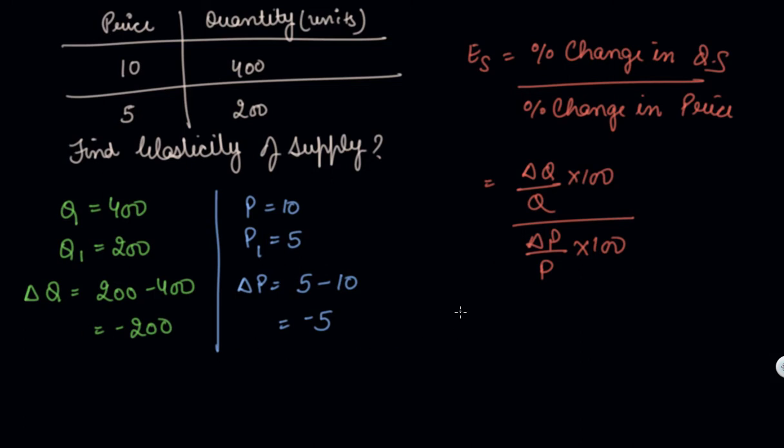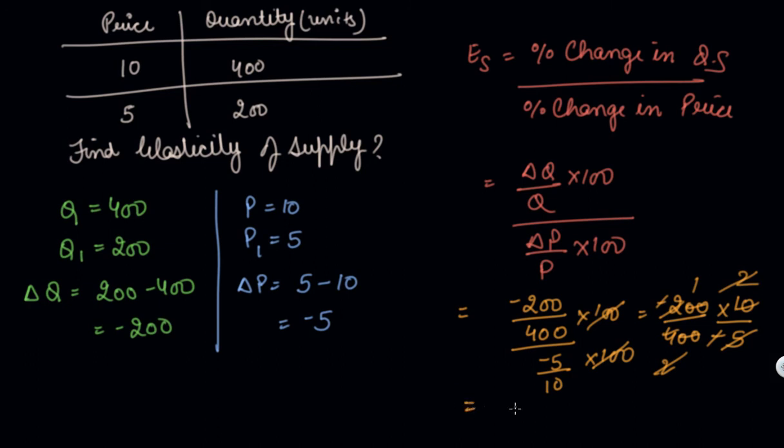So you can put this into the formula. Change in Q is 200 by Q, your Q is 400, divide by change in price is 5, your initial price was 10 into 100 into 100. So this is cancelled by this. You have a formula which is minus 200 by 400 into 10 by minus 5. So minus is deducted by minus, your 2 by 2, your 5, 2 to 10, your 2. Then you cancel, you get your 1 answer.